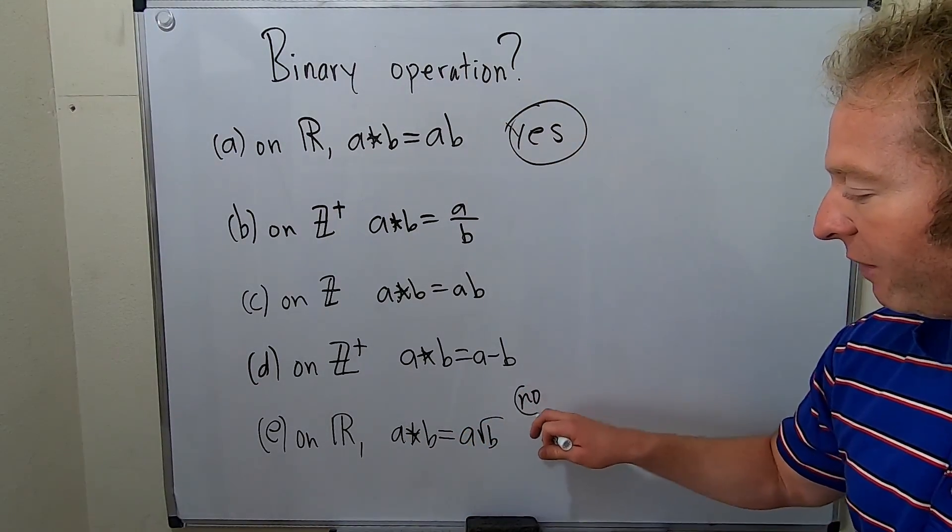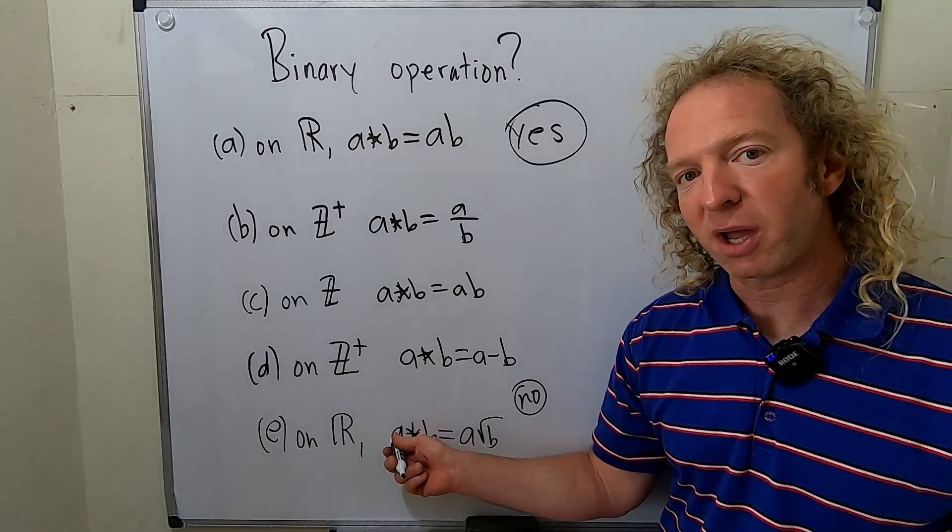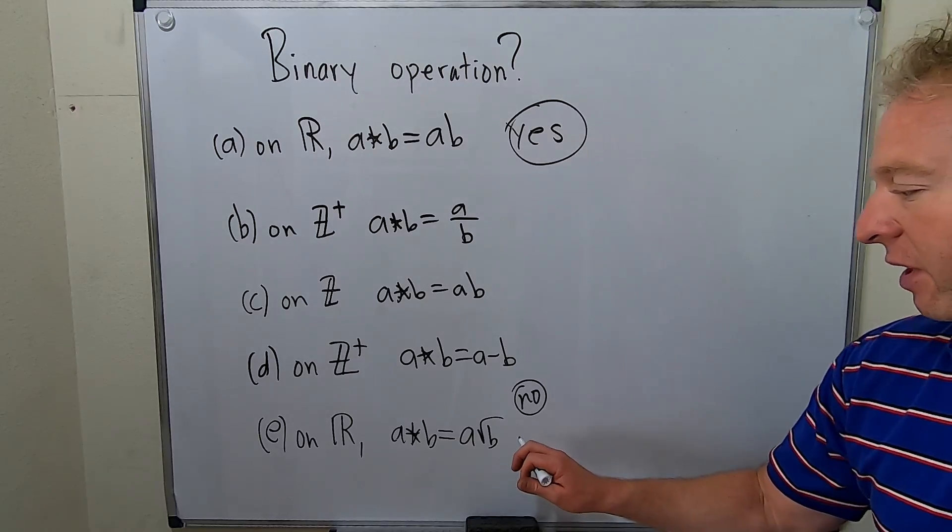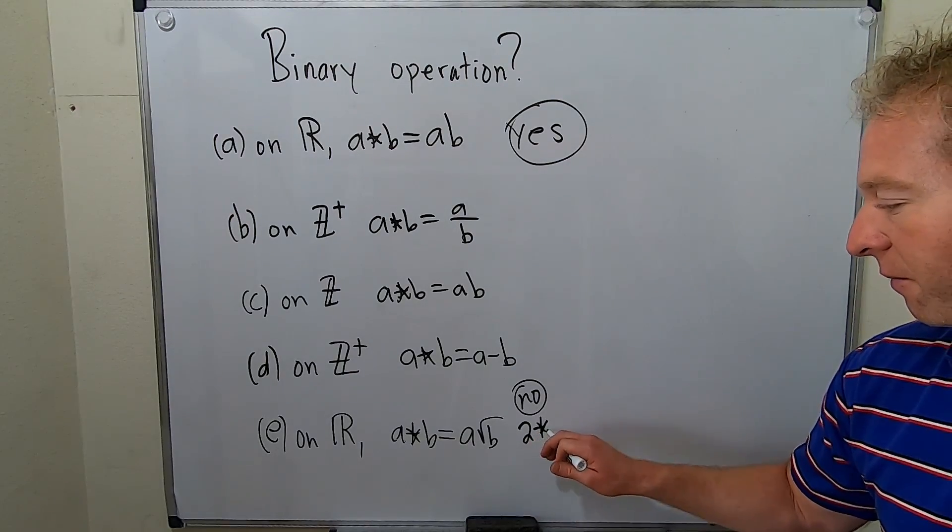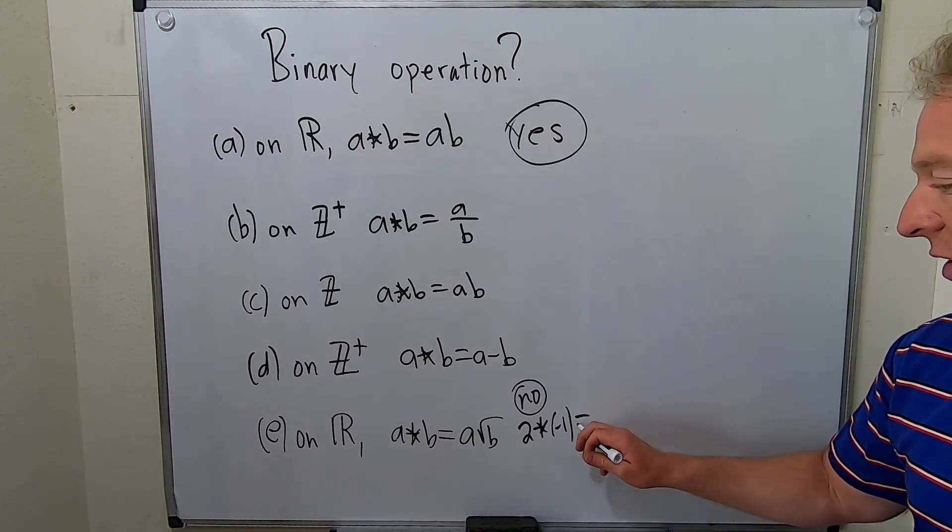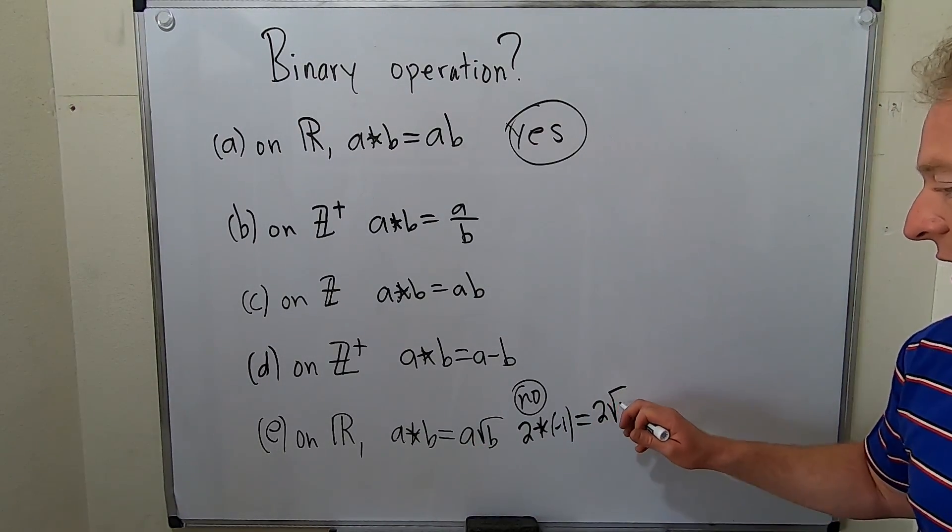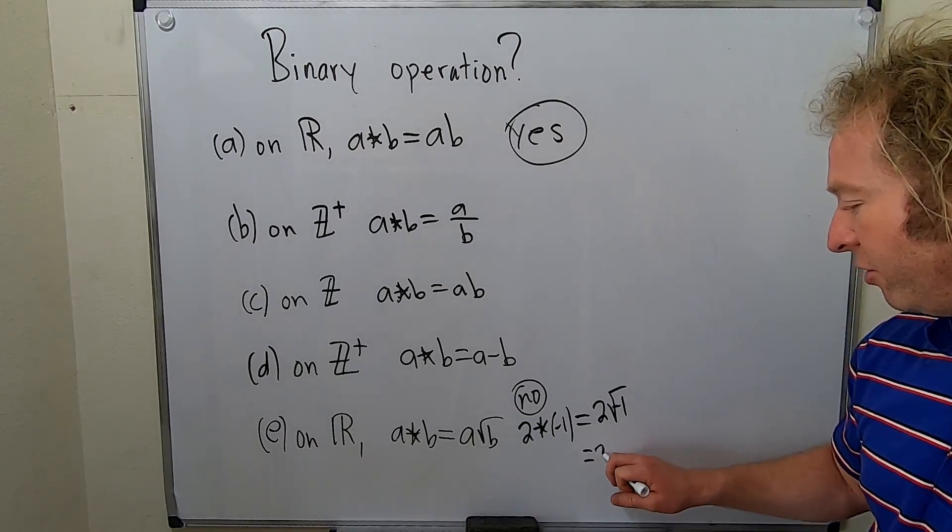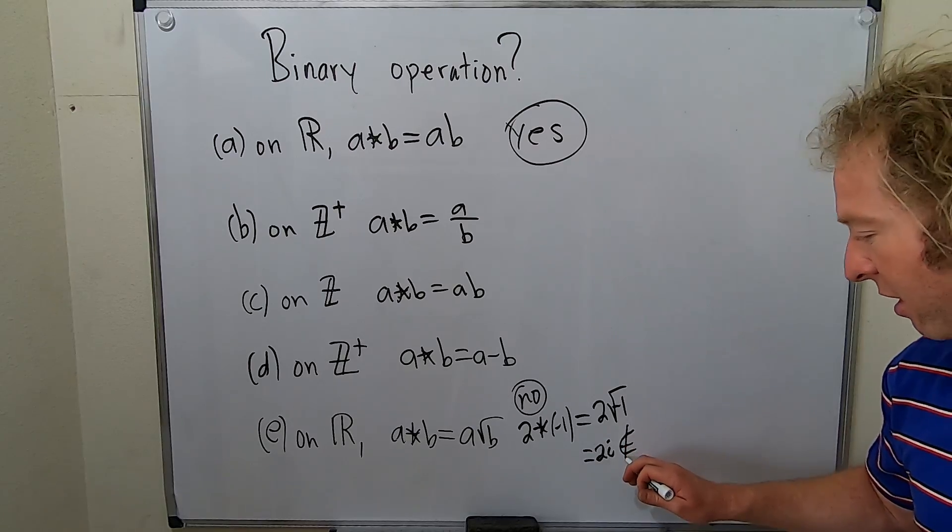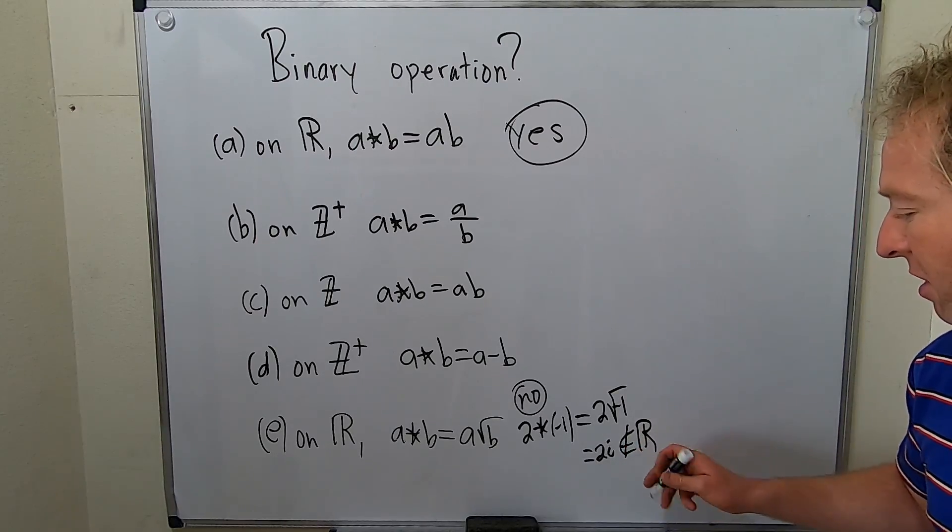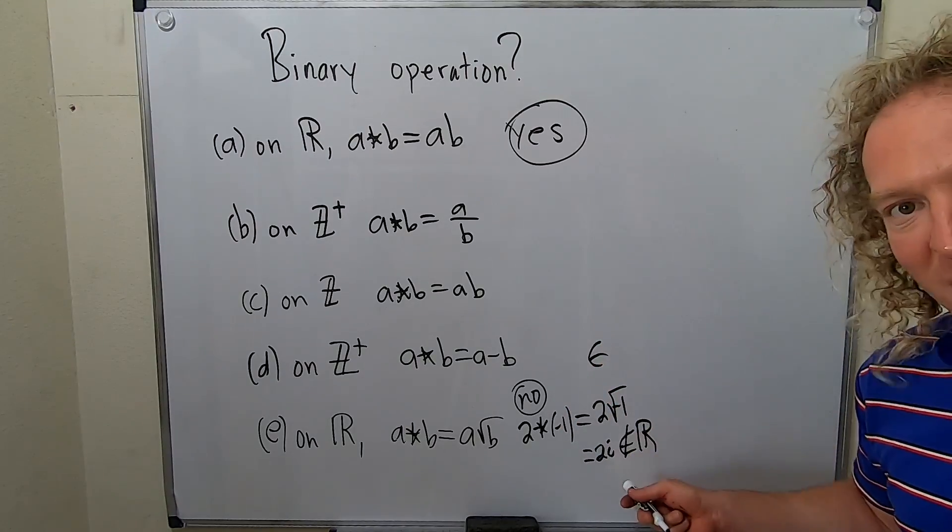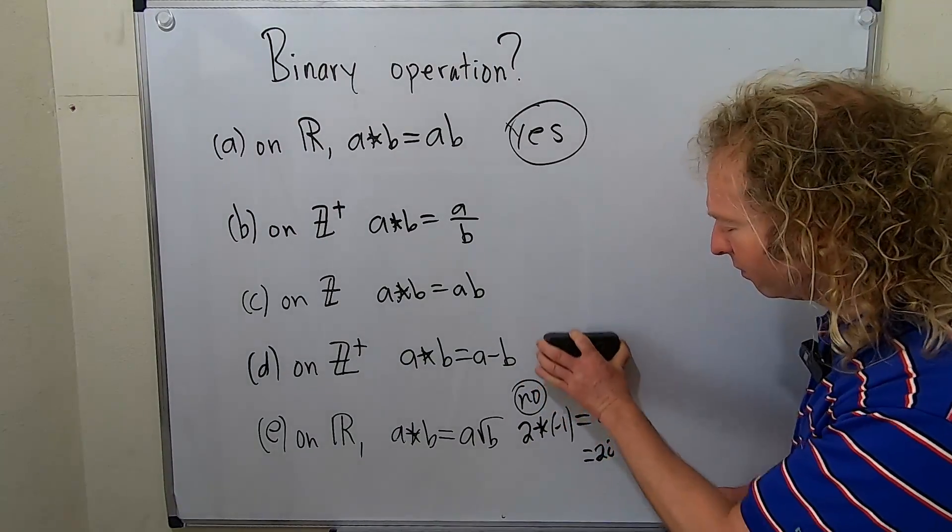Well, the answer is no. Because we can come up with an example of where this fails. One such example, and all you need is one for it to fail, is if you take two star negative one. Negative one is a real number and so is two. And this is equal to two times the square root of negative one, so this is 2i. This is not a real number. This is not an element in the set of real numbers. That means it does not belong.